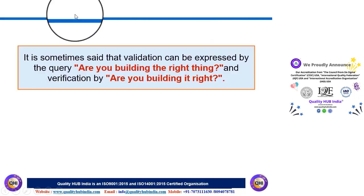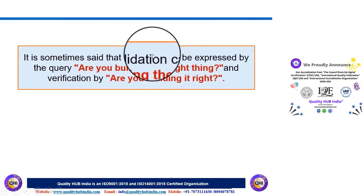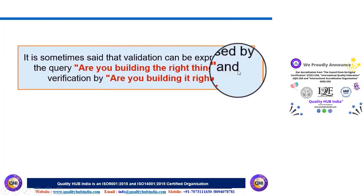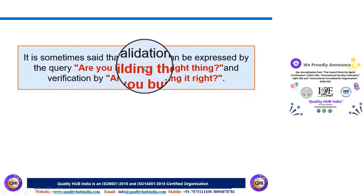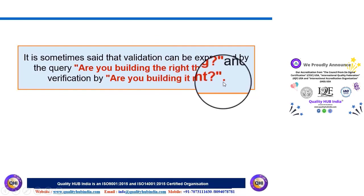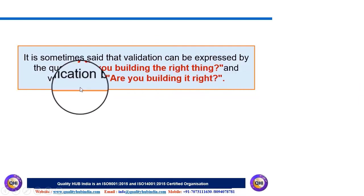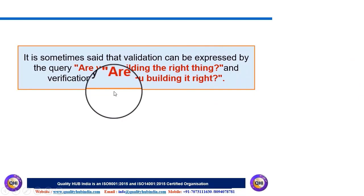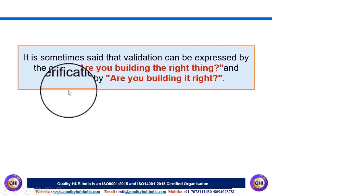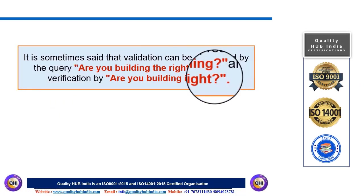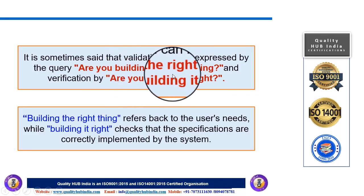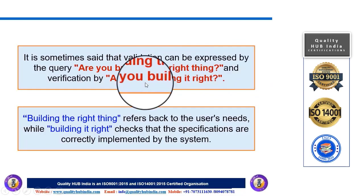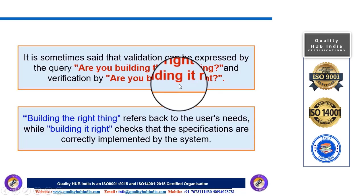Sometimes verification and validation are expressed this way: if you say 'Are you building the right thing?' — that means validation. And when you say 'Are you building it right?' — that is verification. Building it right means checking against the specification, while building the right thing refers back to the user's needs.